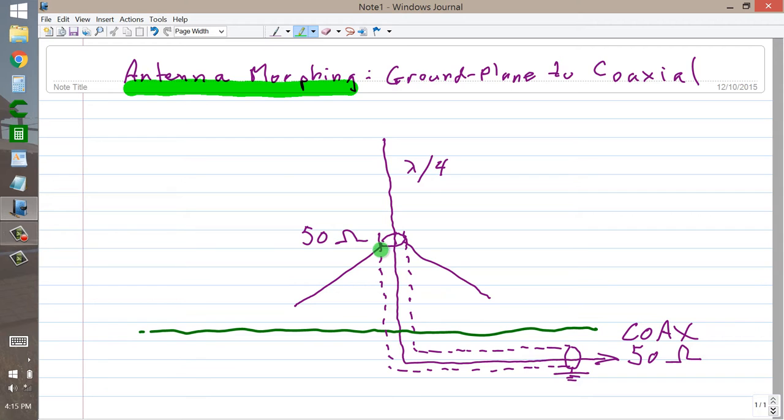Now as you further increase the droop, past the 135 degree angle or 45 degree droop, your feed point impedance continues to remain purely resistive, and it continues to increase, until finally.